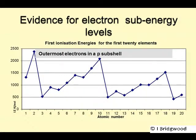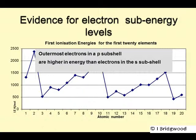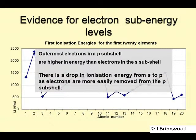Let's start by considering elements 5 and 13, boron and aluminium, because those elements have their outermost electron in a P subshell — that's where the drop occurs. We can use the idea of putting the outermost electron in a P subshell to explain that drop, because the P orbital is higher in energy than the S orbital. Therefore, it's easier to pull the electron from the P subshell because it's further from the nucleus — enough to produce a drop in ionization energy.